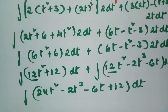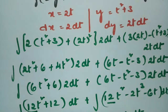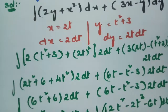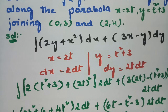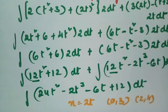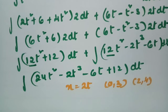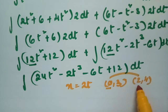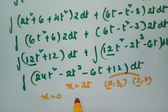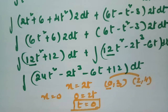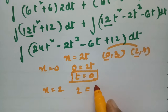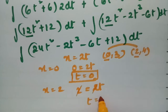Now we need the limits for t. Given x = 2t, and the x-values of the joining points are x = 0 and x = 2. If x = 0, then 0 = 2t so t = 0. If x = 2, then 2 = 2t so t = 1.